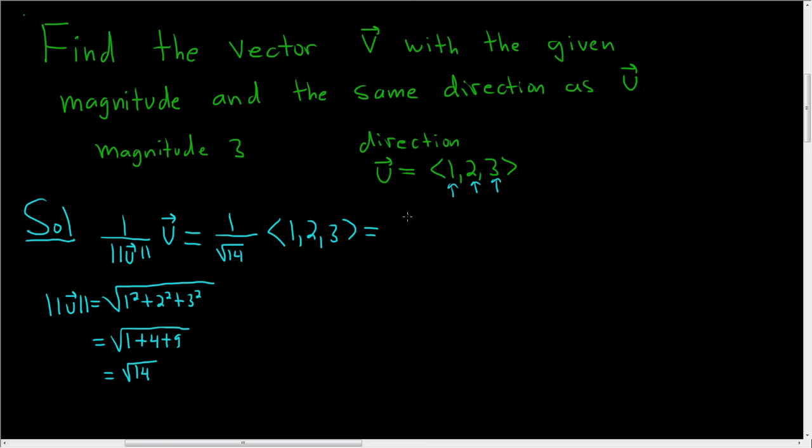And we can actually multiply the 1 over the square root of 14. So this is 1 over the square root of 14, 2 over the square root of 14, and 3 over the square root of 14. So this is a unit vector in the same direction as u.